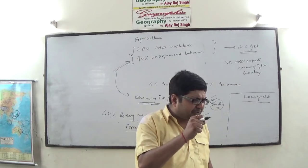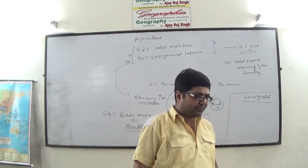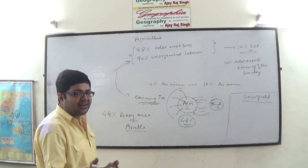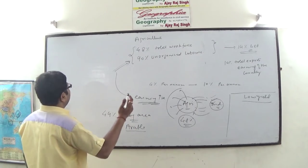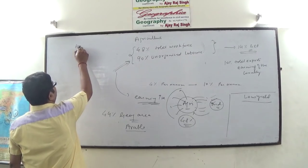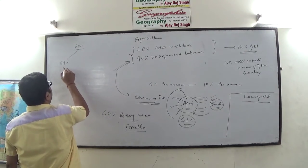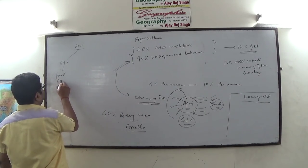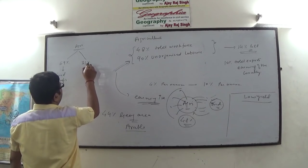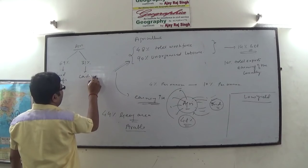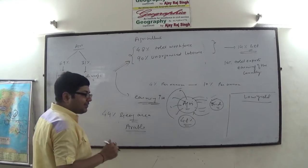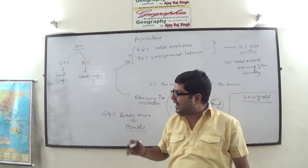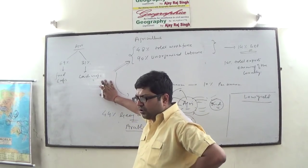I will discuss the intricate issues affecting the yield of Indian agriculture. Before that, I would like to discuss certain basic technologies and concepts. In India's agriculture, 69% of the total arable land area is devoted to food crops, and 31% of the arable land is devoted to cash crops. Cash crops are also known as non-food crops.